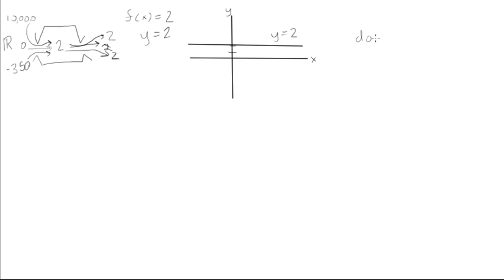So, the domain of a constant function, the domain is all of the real numbers. You can obviously see it's going to go all the way that way, all the way that way. And the range, the range is actually just equal to one number, the range is just equal to 2. You can't have any other y values or f of x values other than 2.